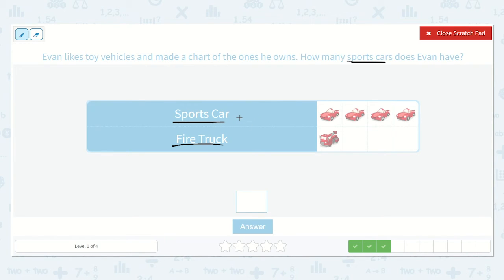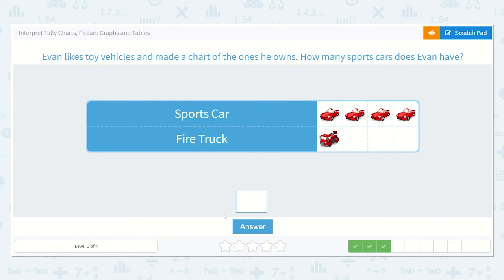How many does he own? Let's see. Let's follow it straight across. One, two, three, four. He owns four. Amazing work.